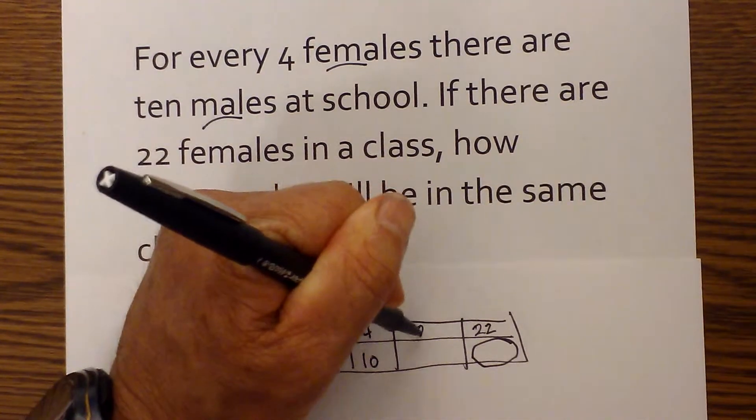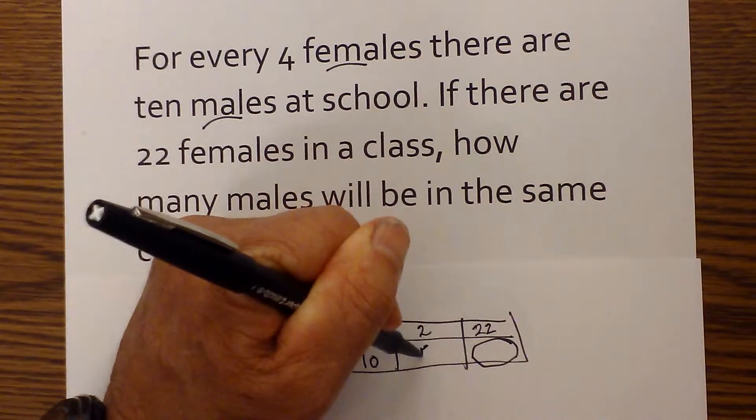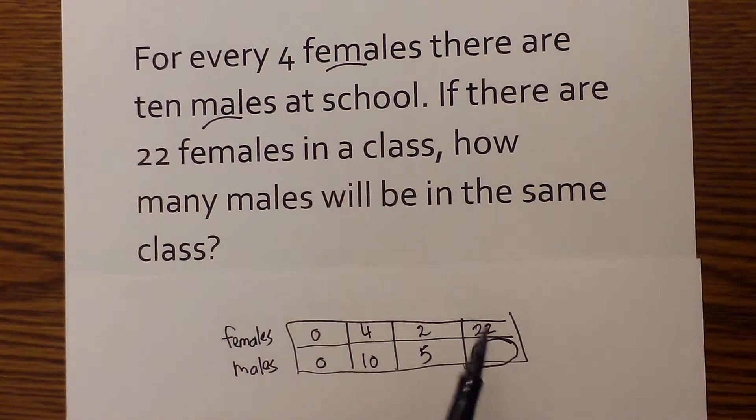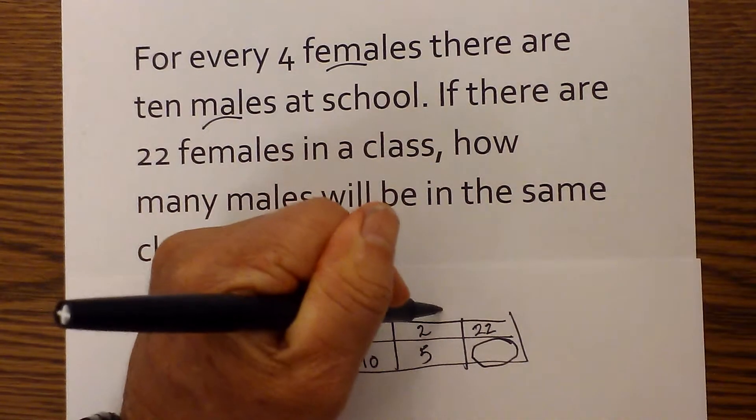4 divided by 2 is 2. 10 divided by 2 is 5. Next, I look at the number I want to get to. And I divide it by the previous. So 22 divided by 2 is 11. So 2 times 11 is 22.